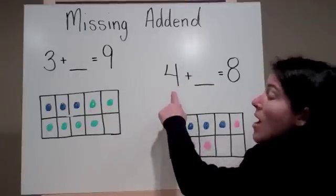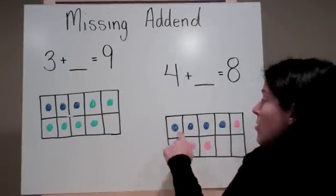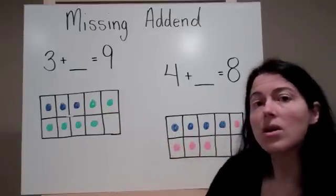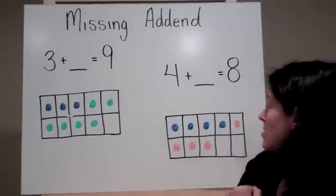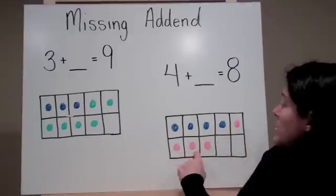I start by coloring in how many addends I already have. 1, 2, 3, 4. Now I make it so that the tens frame has 8 in total. 5, 6, 7, 8.